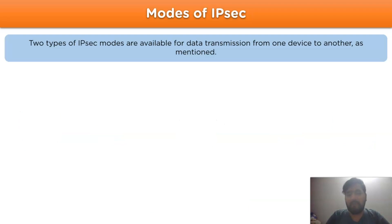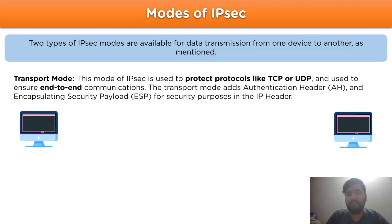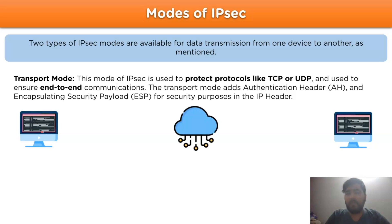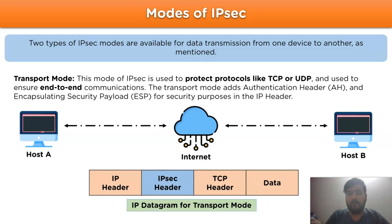Now let's move on to the second mode of IPSec: Transport mode. This mode is used to protect protocols like TCP or UDP and is used to ensure end-to-end communication, unlike Tunnel mode. The Transport mode adds Authentication Header and Encapsulating Security Payload for security purposes in the IP header. The point to be noted is that the IPSec header is always added between the IP header and the TCP header.